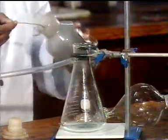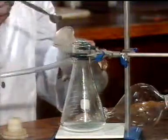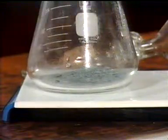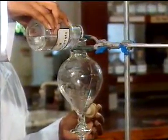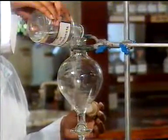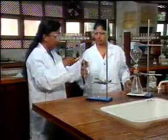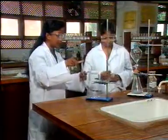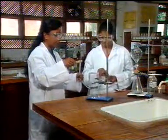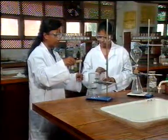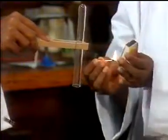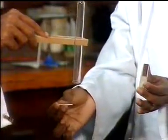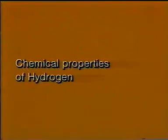Here we use zinc dust and dilute hydrochloric acid. Hydrogen gas can be identified by holding a test tube of Hydrogen opposite to a lighted splint. The gas burns with a squeaky pop.